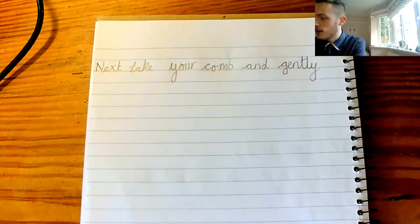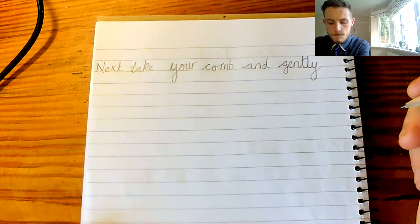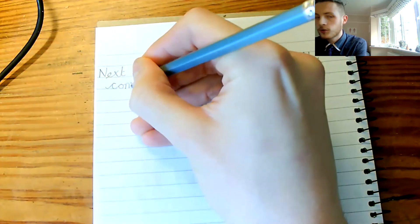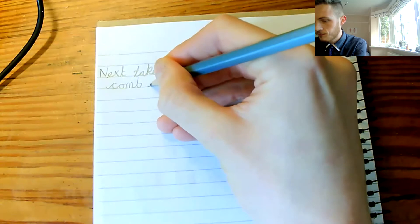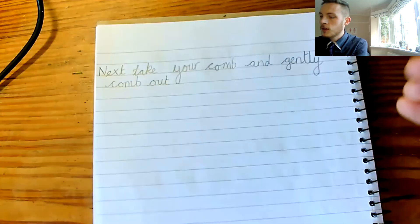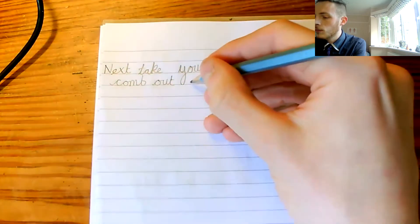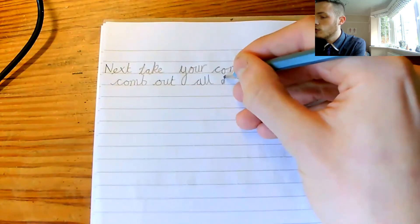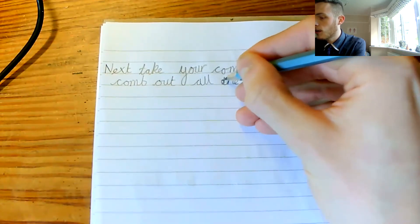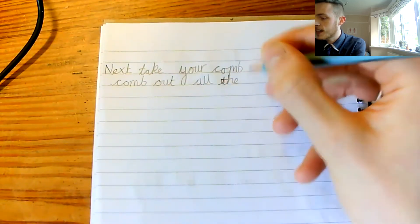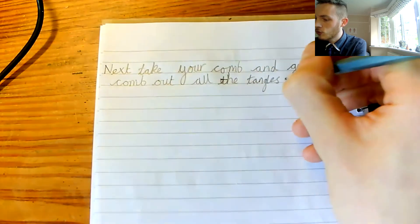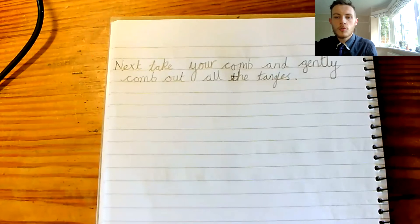Gently, lovely written, and gently, comb out. So, that's my verb, comb out. And gently comb out all of, all, all the tangles. Gently comb out all the tangles. Full stop. Next, take your comb and gently comb out all the tangles. Excellent.